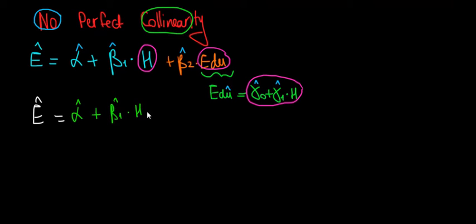Let's write it as beta 2 multiplied with the line of education that we explain via this regression, which is gamma 0, plus gamma 1 times the height. Now let's open this bracket to see what we get.